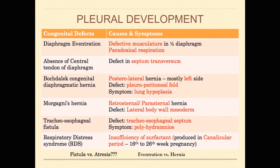Last thing: a little bit about pleural development. We talked about some of these earlier in thorax. Diaphragm eventration is when you have defective musculature — this usually leads to paradoxical respiration. It's not a hole, so it's not actually a hernia where internal abdominal organs push up into your thoracic cavity. It's really just weak musculature. When you breathe in and inspire, you push extra pressure on your abdominal cavity, and with weak muscle on one side, intestinal organs can push up into your thoracic cavity — this is known as paradoxical respiration.